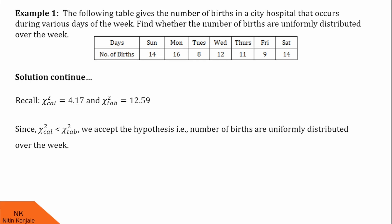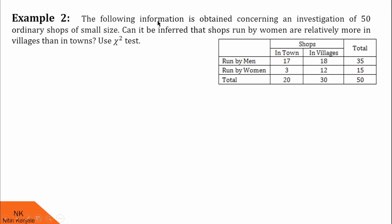Now, let us proceed for the next example. In this example, we are given the information obtained concerning an investigation of 50 ordinary shops of small size. Can it be inferred that the shops run by women are relatively more in villages than in town? We are asked to use the chi-square test. Look at this table of data. We are given the data of shops in town and in villages. There are 50 such shops, out of which 35 are run by men and 15 are run by women. Out of 35, 17 men run shops in town and 18 men run shops in villages. And out of 15 women, 3 women run shops in town and 12 women run shops in villages.